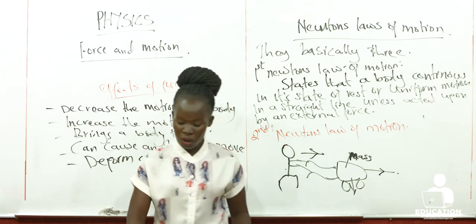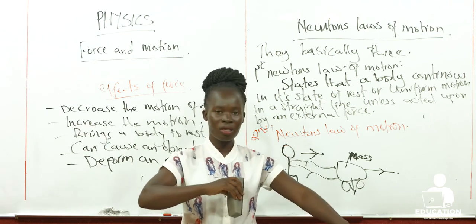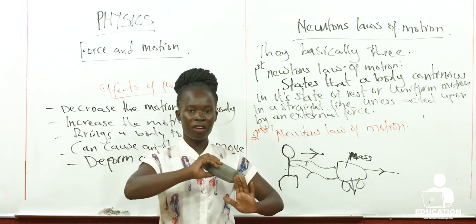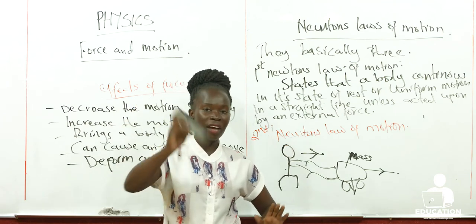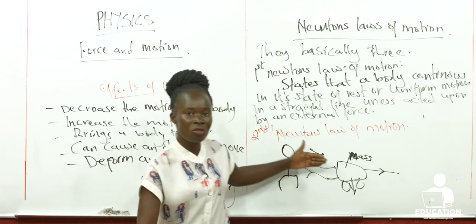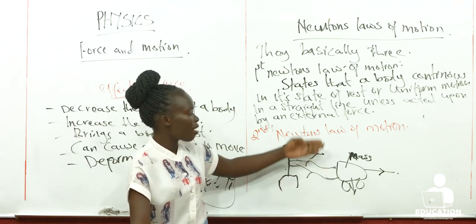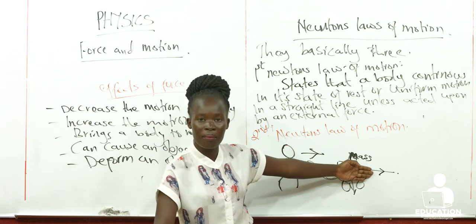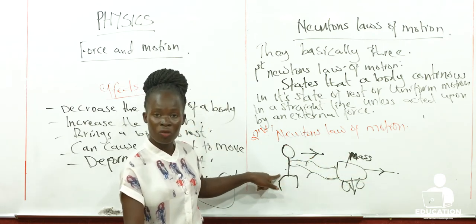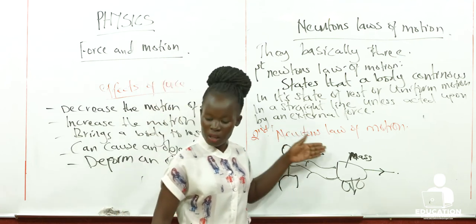When you try to throw something and you throw it slowly, it will take a small distance and doesn't move very fast. But if you give it a very hard throw, you've increased the force. Since force and acceleration are moving in the same direction, the rate of change of momentum is directly proportional to the force applied and takes the direction of the force.